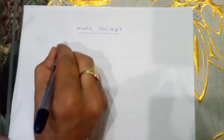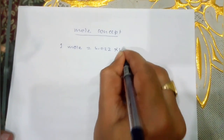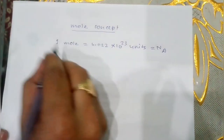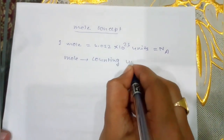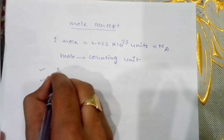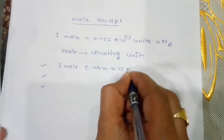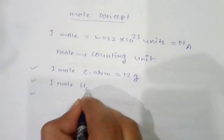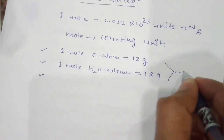One mole is equal to 6.022 × 10²³ units, and this is equal to NA — Avogadro's number. Mole is simply a counting unit. The first definition: one mole of carbon atom is equal to 12 grams in terms of mass. One mole of H₂O molecule is equal to 18 grams in terms of mass.